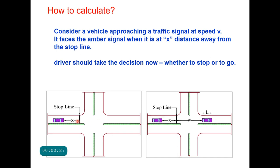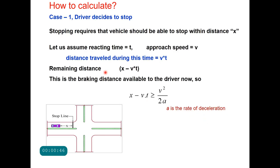If the driver decides to stop, he should be able to stop within this distance. If the driver decides to continue, he should be able to clear the distance x plus w plus l before onset of the red time. Let us take Case 1, when the driver decides to stop. Stopping will require that the vehicle should be able to stop within this distance x.